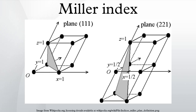There are also several related notations. The notation with curly brackets denotes the set of all planes that are equivalent by the symmetry of the lattice. In the context of crystal directions, the corresponding notations with square instead of round brackets